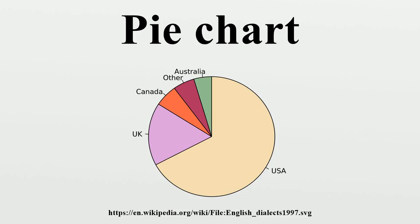An obvious flaw exhibited by pie charts is that they cannot show more than a few values without separating the visual encoding from the data they represent. When slices become too small, pie charts have to rely on colors, textures, or arrows so the reader can understand them. This makes them unsuitable for use with larger amounts of data. Pie charts also take up a larger amount of space on the page compared to the more flexible bar charts, which do not need to have separate legends, and can display other values such as averages or targets at the same time.